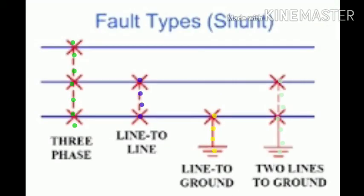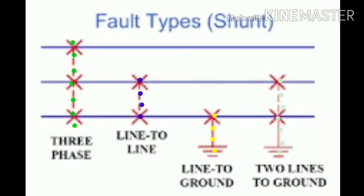In the next picture, we see the three-phase fault, where three lines are connected to each other. When lines are connected line-to-line, this fault is called the line-to-line fault. When a line is connected to ground, it is called the line-to-ground fault. When two lines are connected to each other and also connected to ground, this is called the double line-to-ground fault.